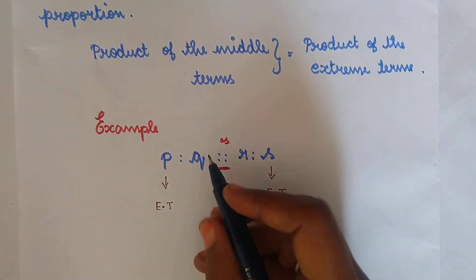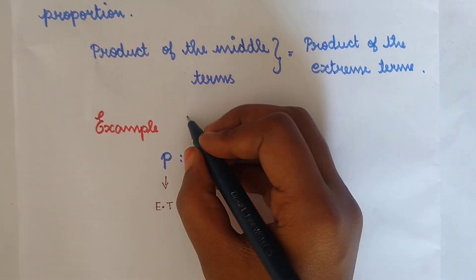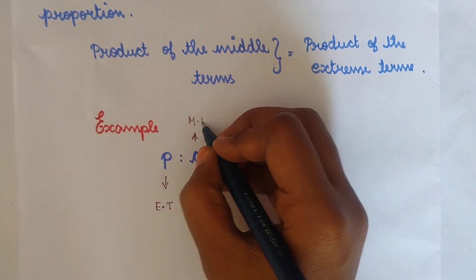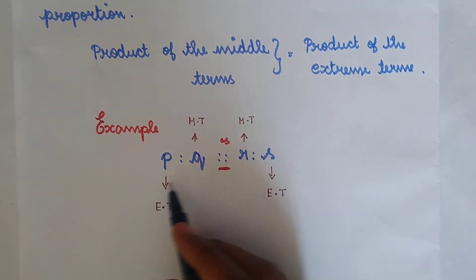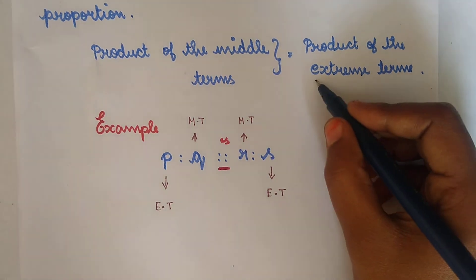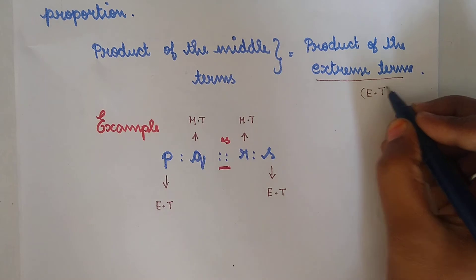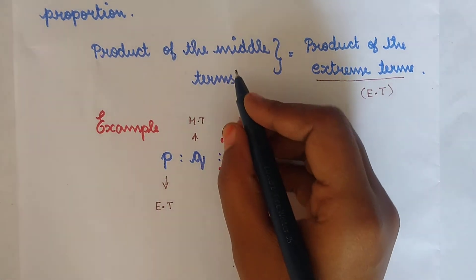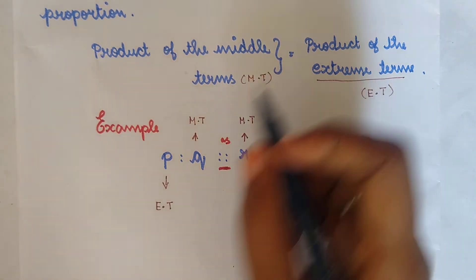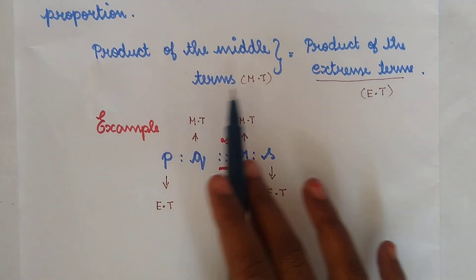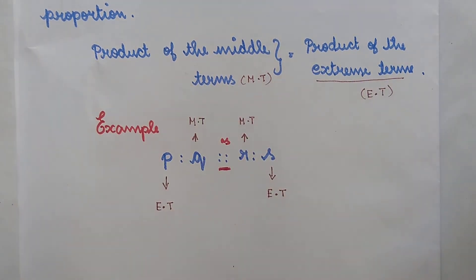And Q and R are called the middle terms. So P and S is the extreme term, and Q and R is the middle term. The formula is: product of the middle terms equals product of the extreme terms.